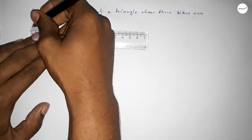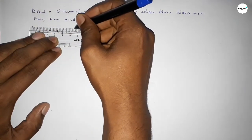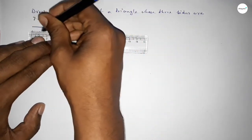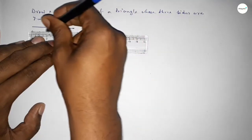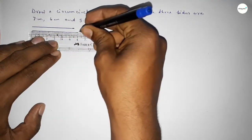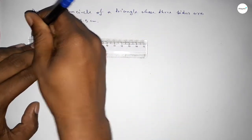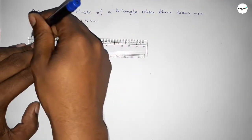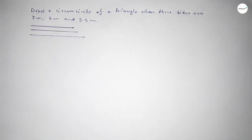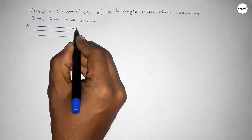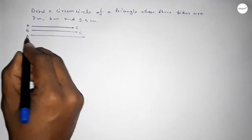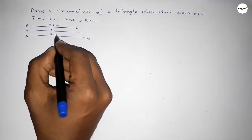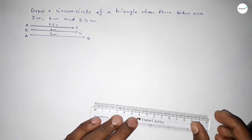First of all we have to draw the three sides. Drawing here 5.5 centimeter — this is AC. Drawing 6 centimeter — this is BC. And drawing another line of 7 centimeter — this is AB. So this is 5.5 centimeter, this is 6 centimeter, and this is 7 centimeter.